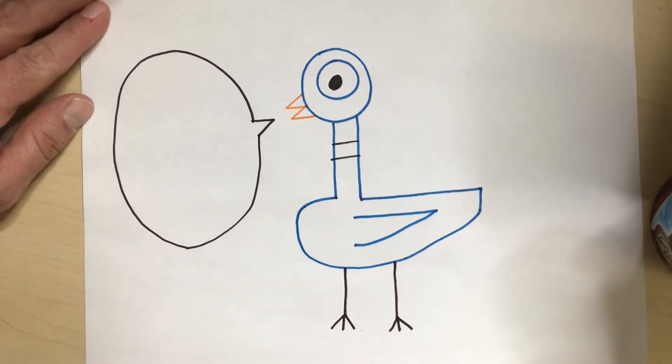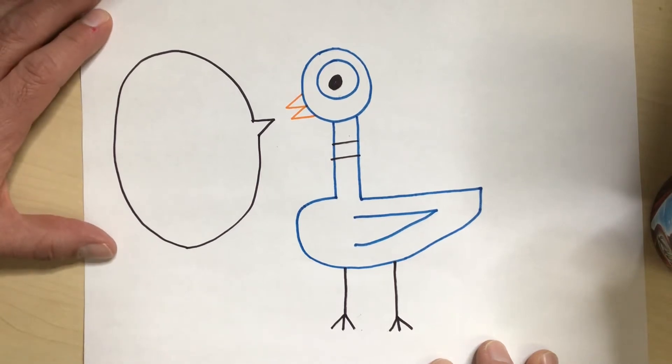I'm going to think about what I might have the pigeon say. Oh, you know what? I think the pigeon really likes to eat different types of foods. I know he likes cookies. I know he likes hot dogs. I bet the pigeon likes ice cream. So, I think I'm going to have the pigeon asking for an ice cream cone.